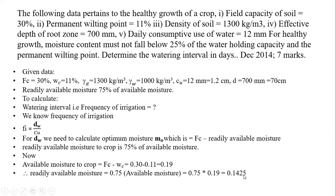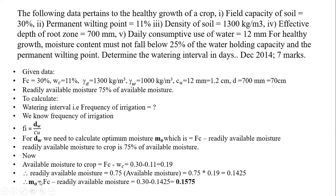We need this 0.1425 value to find the optimum moisture content, MO. Using this magnitude, we calculate MO: optimum moisture content equals field capacity minus readily available moisture — that is 0.3 minus 0.1425 — which gives 0.1575, or approximately 15.75%. This is the limit of optimum moisture content for this particular case.